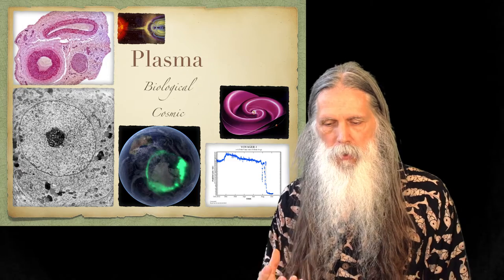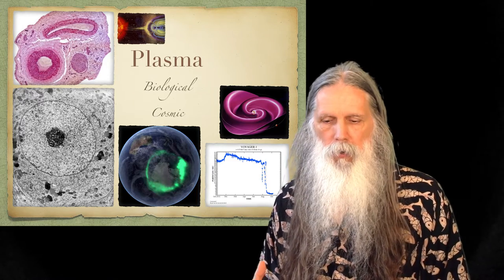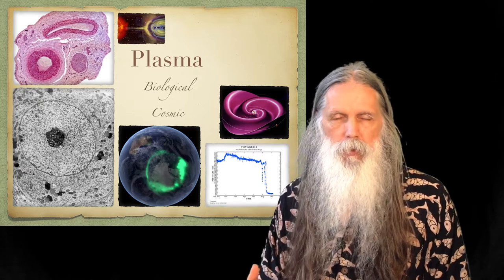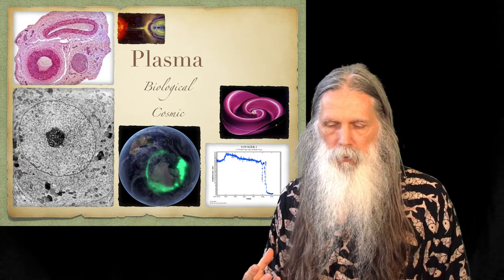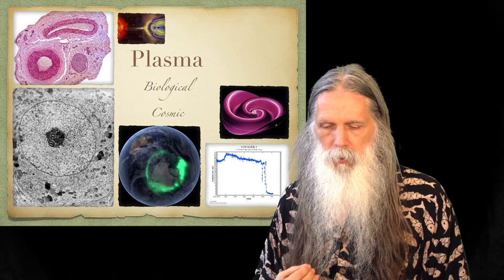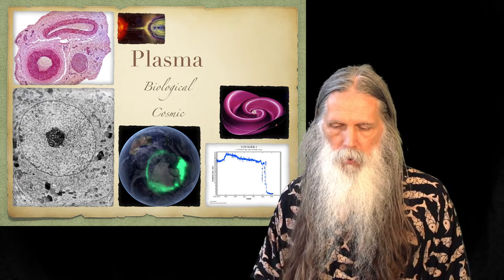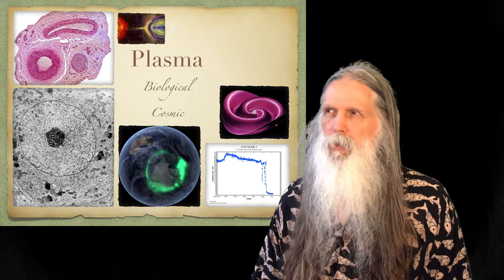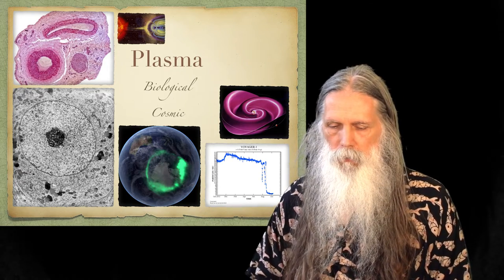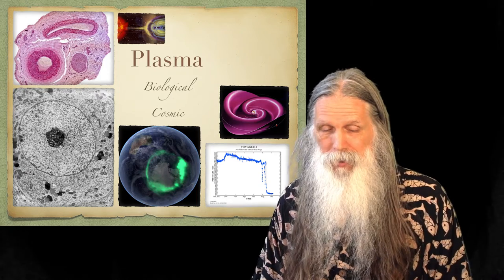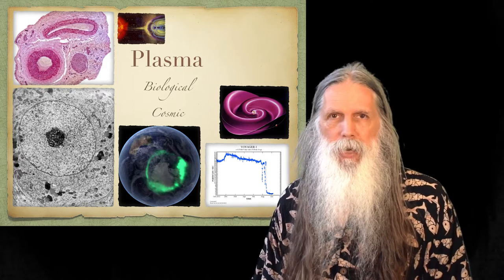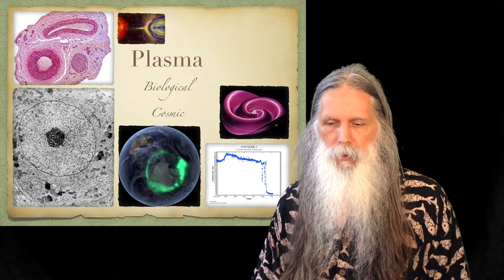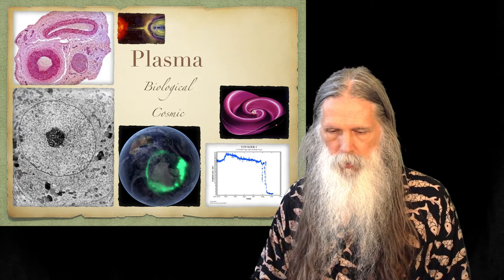The point is that plasma structures are essentially the same — they have the same shapes and functions at cosmological scales as at biological scales and smaller scales, down to the single cell. At least 16 or so orders of magnitude of scalability of plasma structures have been documented in laboratory studies.